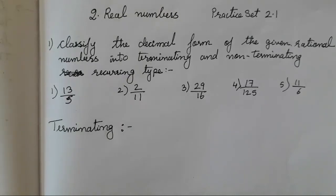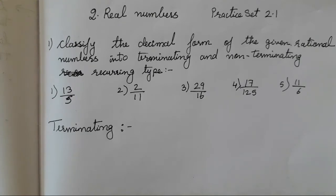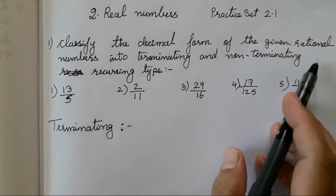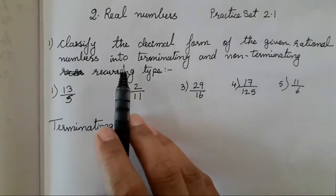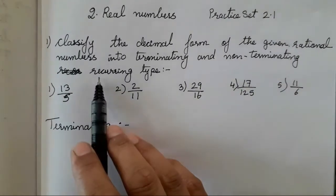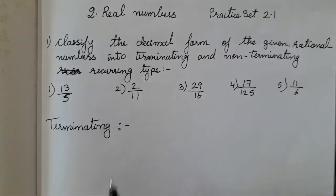Hello everyone. Today we are going to do Class 9, Chapter 2, Real Numbers, Practice Set 2.1. So let's start with the first example: classify the decimal form of the given rational numbers into terminating and non-terminating recurring type.